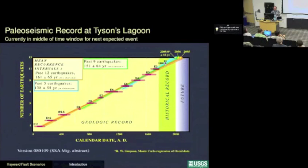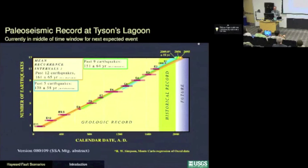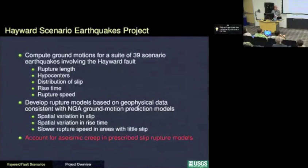The last large earthquake on the Hayward Fault was in 1868, described by Mark Twain, and also documented following the 1906 earthquake. Going back in time, some events have a very large range of uncertainty and some are tightly constrained. If you project forward over the last 5, 9, or 12 events, you come up with recurrence intervals in the range of 140 to 160 years, and the clock is ticking at about 144 years. So we need to be prepared, and that has led us to do some simulations trying to examine the Hayward Fault in detail.